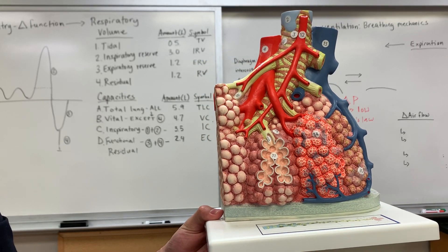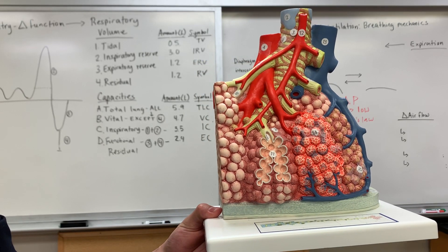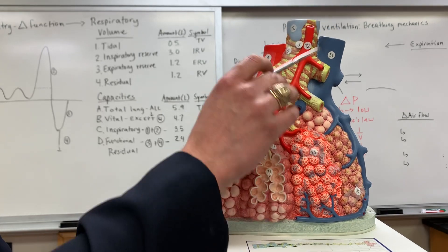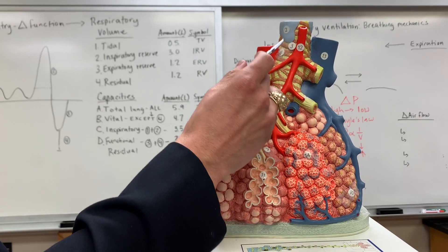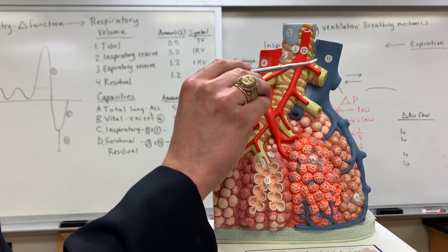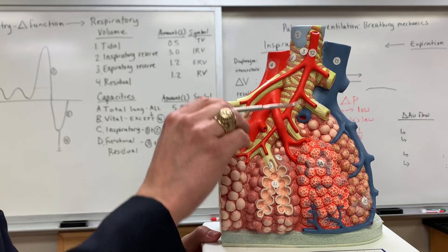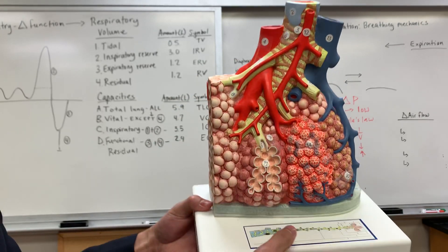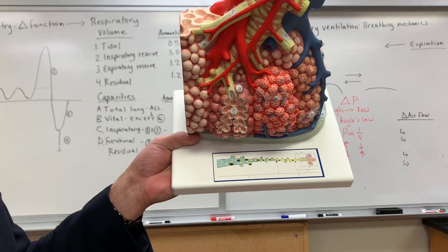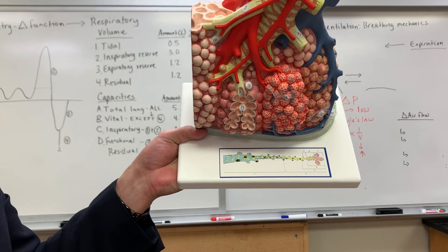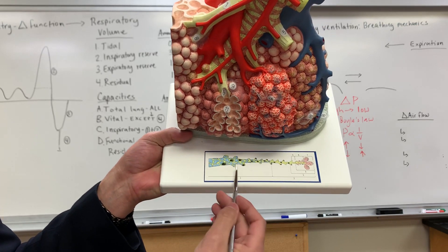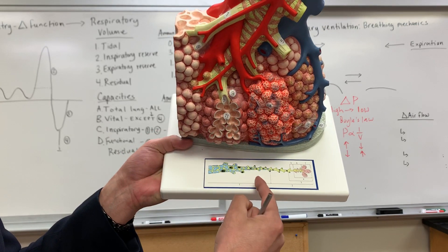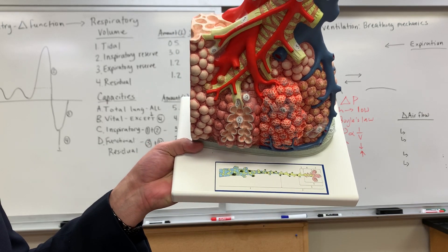In this video, we're going to go over the pulmonary lobule model. Before getting into the branching of the different bronchus and how it goes into the bronchioles, I want to show you this diagram that's here on the base of the model, because what this is showing is how it branches into each of the different parts.